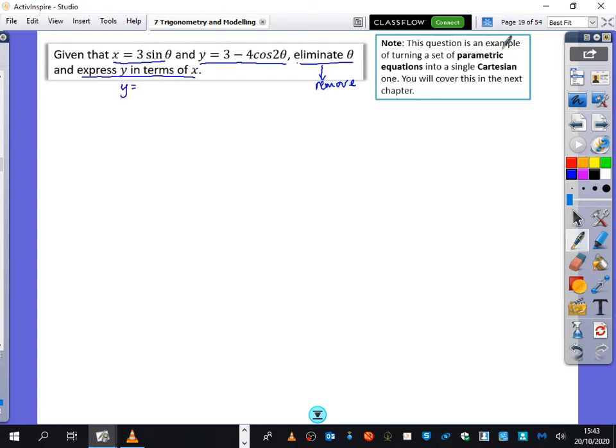This is interesting, actually, because this question here is an example of turning a set of parametric equations into a single Cartesian one. I've said you'll cover this in the next chapter, but actually, if you're in my school, you'll have already covered parametric equations.